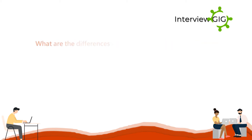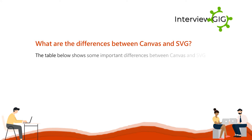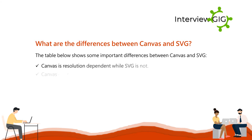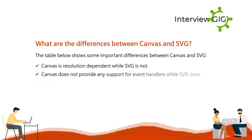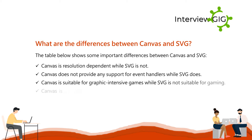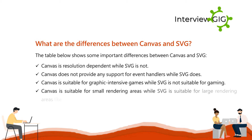What are the differences between canvas and SVG? Canvas is resolution dependent while SVG is not. Canvas does not provide any support for event handlers while SVG does. Canvas is suitable for graphic-intensive games while SVG is not suitable for gaming. Canvas is suitable for small rendering areas while SVG is suitable for large rendering areas like Google Maps.